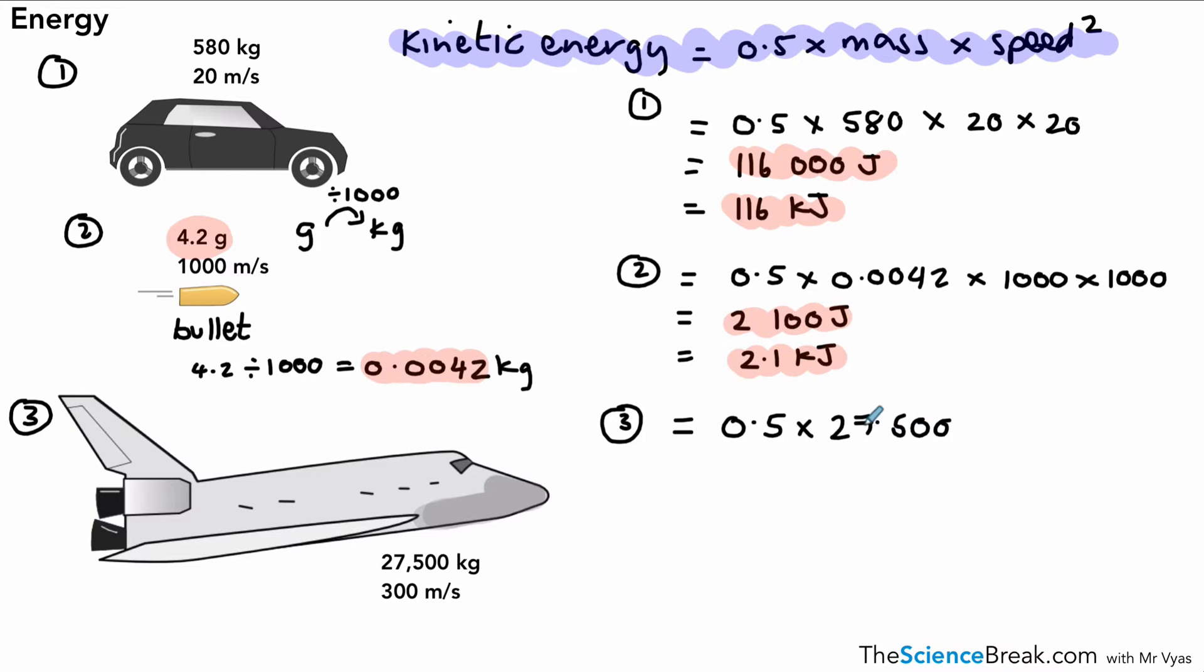So, putting in the numbers, we would have 0.5, which doesn't change, 0.5 times 27,500, which is the mass of our shuttle, times the speed times the speed—or speed squared—which is that. And then we have rather a large number: 1,237,500,000. That's a large number to deal with, and we could change it to kilojoules, but it doesn't really make it that much more simple.